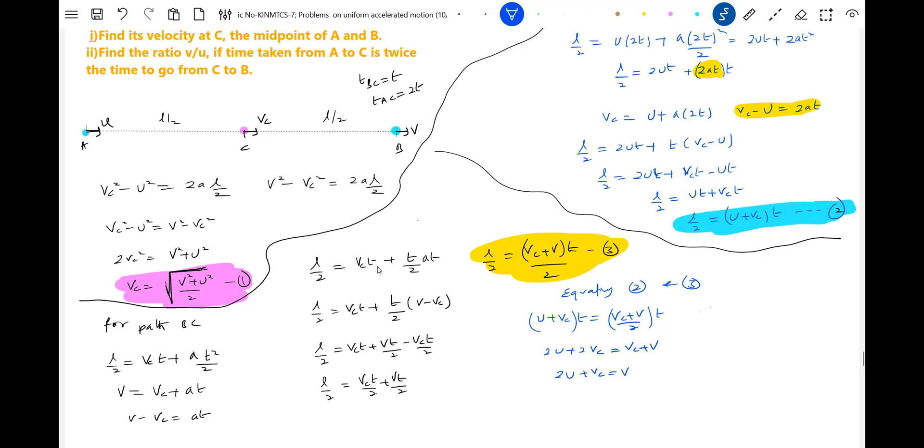Let me substitute vc value here. vc will be root of v squared plus u squared by 2 equal to v minus 2u. Squaring on both sides, v squared plus u squared by 2 equal to v minus 2u all squared. We'll end up with v squared plus 4u squared minus 8vu.